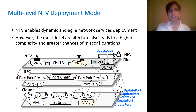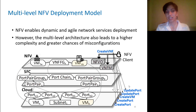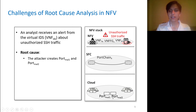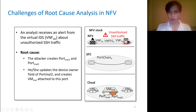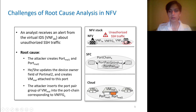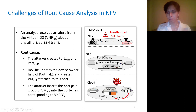And you can also imagine when we have these multiple levels of sequences of operations, it would mean that we have a much larger amount of log data to analyze. To better understand the need for an automated solution, let's look at this example. Here, an analyst receives an alert from the virtual IDS at the NFV level about unauthorized SSH traffic. This incident happened because an attacker created two ports at the cloud level, updated the device owner field of a port attached to his VM so he could exploit a vulnerability to spoof the IP address of the source enterprise, sending network traffic to the VNF forwarding graph VNFFGX. Then the attacker inserts the port group of this VM into the port chain corresponding to VNFFGX at the SFC level, and sends malicious traffic from his VM to this VNF.